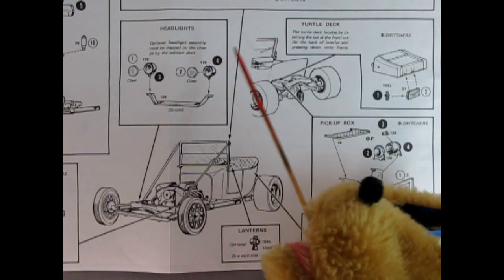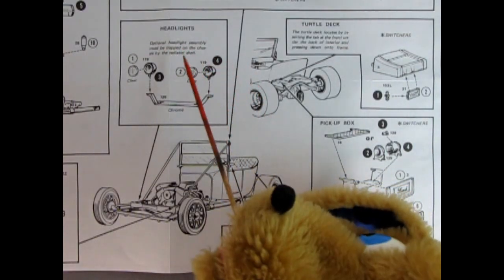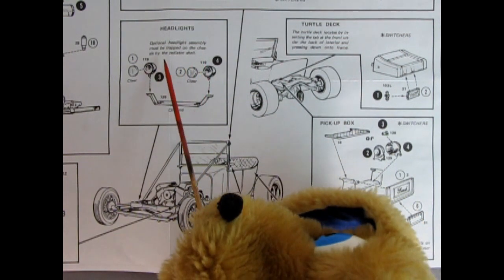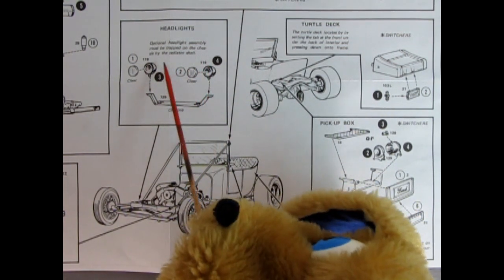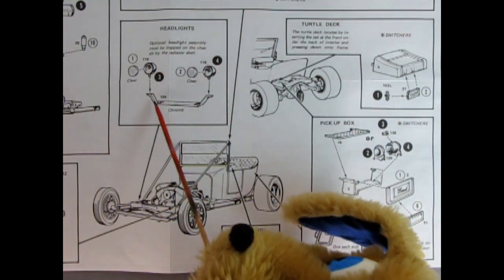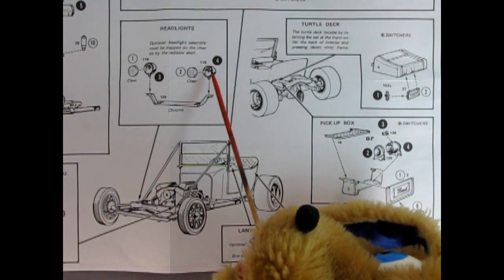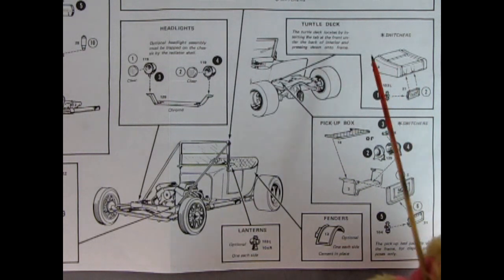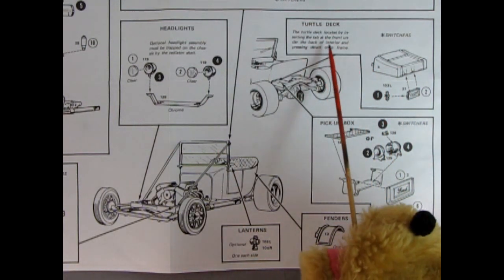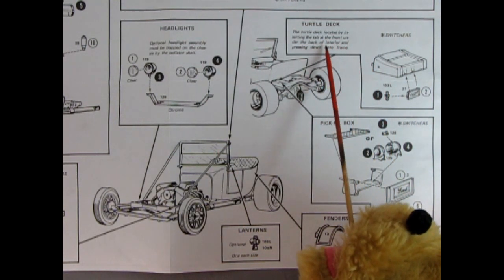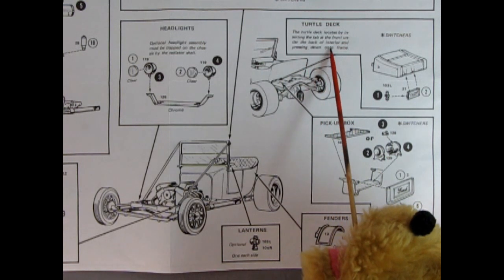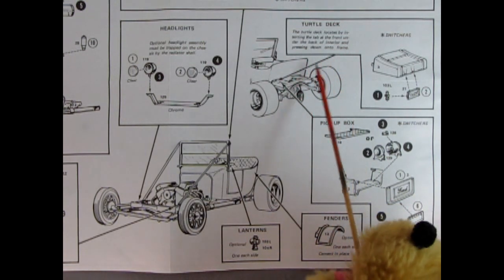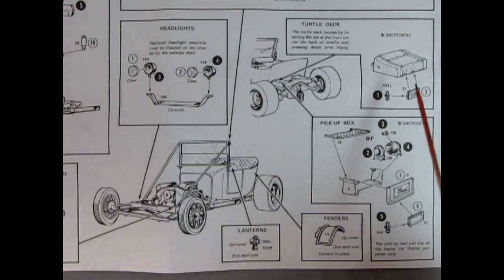Now we've got a lot going on here. These are the headlights. And it says optional headlight assembly must be trapped on the chassis by the radiator shell. Here it shows this little bar in here. And then our headlights drop in. And the clear lenses go inside there. Now here it says turtle deck. The turtle deck locates by inserting the tab at the front under the back of the interior and pressing down onto the frame. So it would click in place. There's the turtle deck right there. And you get the nice backup light here and the license plate.